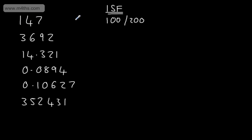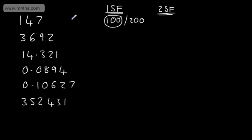So we're going to have 100 to one significant figure — this is closer to 100 than it is to 200. If we look at rounding 147 to two significant figures, we're rounding to the nearest 10. My choices are 140 or 150.